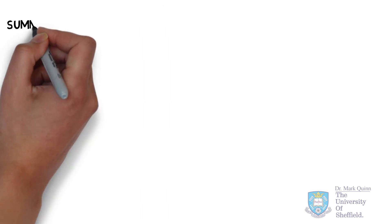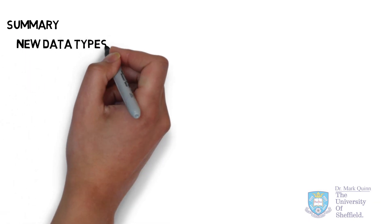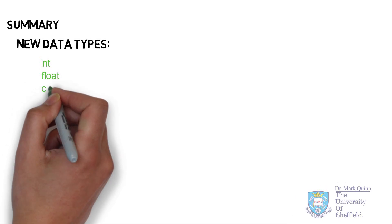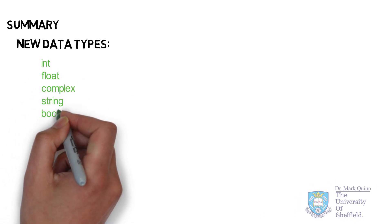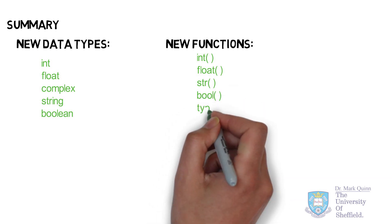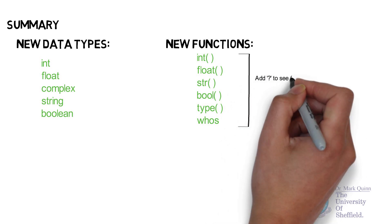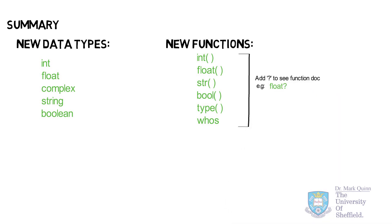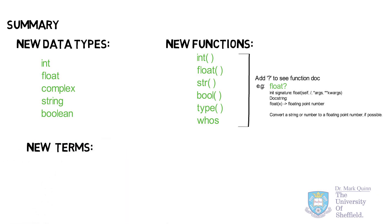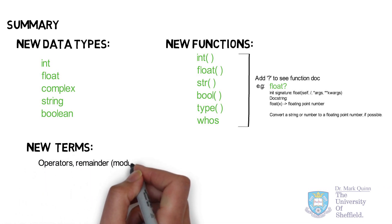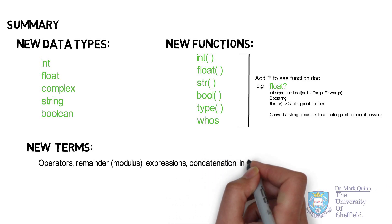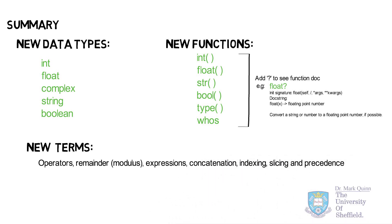In summary, in this video lecture we've had an introduction to the basic data types, which begin with the numerical types of the integer, the float, and complex numbers. Next, we've got strings of characters and boolean data types of true and false. We've had a number of new functions, such as the conversion functions for the data types, together with type and whos, which gives us information on the data type and an overview of data types in memory. Also take note of the new programming jargon: operators, modulus for remainder, expressions, concatenation, indexing, slicing, and finally precedence.